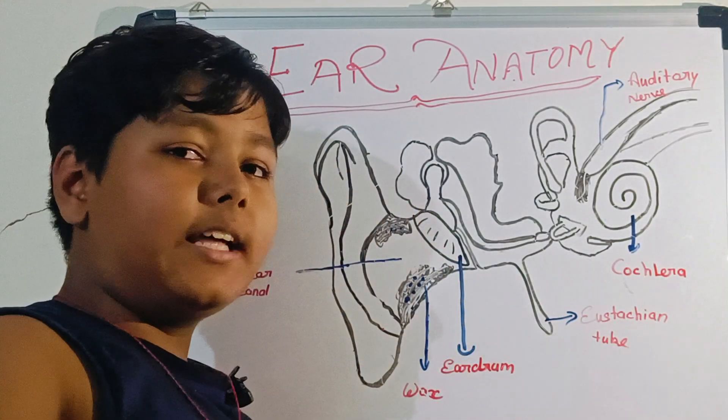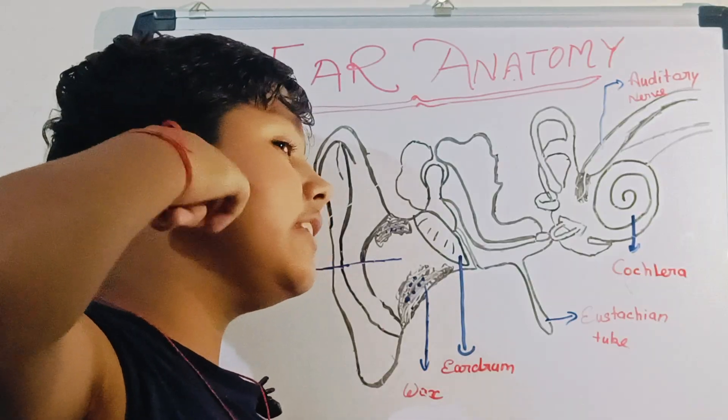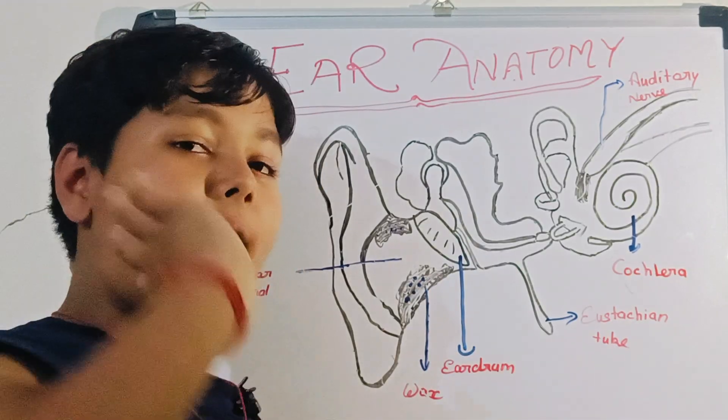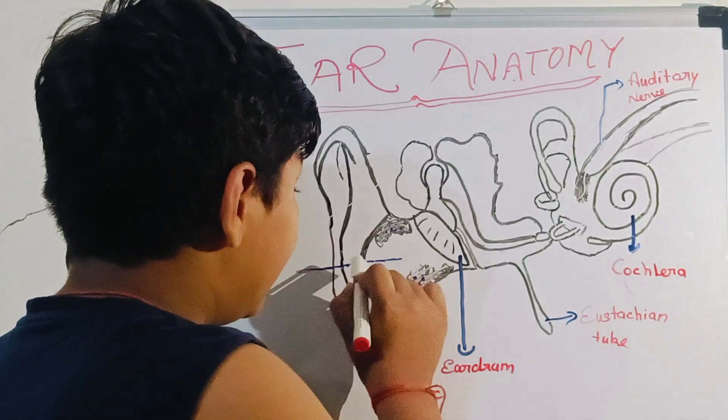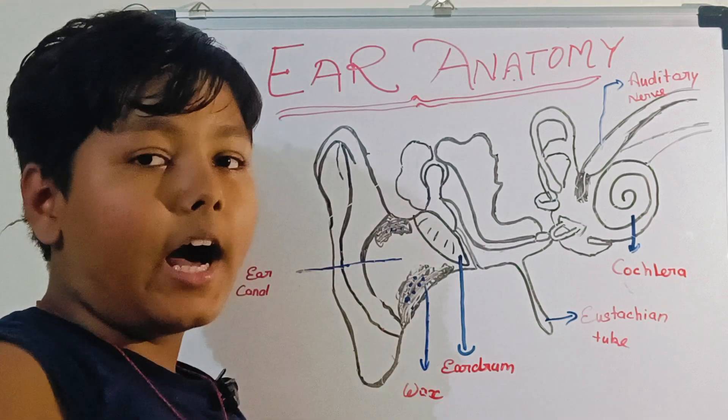Because the sound that is coming from here will travel here, here, here, and then go into the hole. Not directly into the hole, but it travels along the pathway. So after that, the sound enters into a pathway called the ear canal.